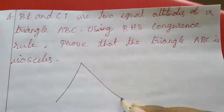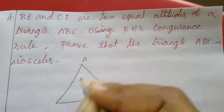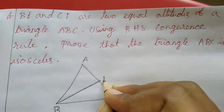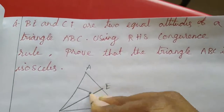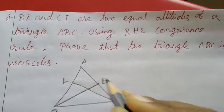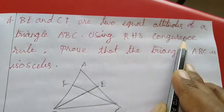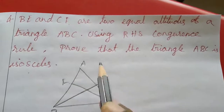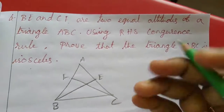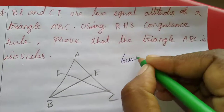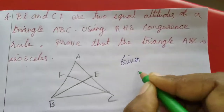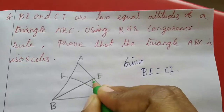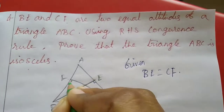So now this is triangle ABC, and here B, then this is C, F. Using RHS congruence rule, prove that triangle ABC is isosceles. We want to prove that ABC is an isosceles triangle.